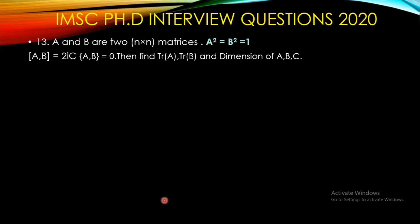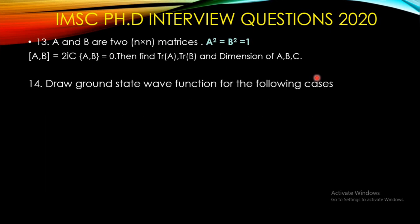Another question asked to another candidate: matrices A and B are N×N matrices with |A|² = |B|² = 1, commutator [A, B] = 2iC, and commutator [AB, D] = 0. They asked to find the trace of A, trace of B, and the dimension of ABC. If you work out this problem it is not much difficult.